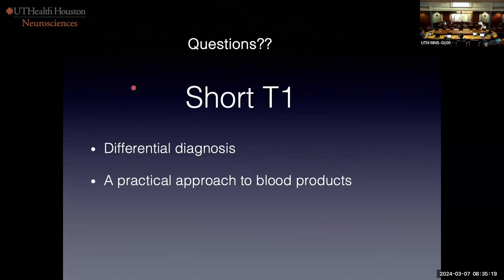Why aren't higher magnets like 7 Tesla or 5 Tesla practical? The physics answer: the possible signal you can get scales with the square of the magnetic field strength. So going from 1.5 to 3 tesla doesn't give you two times signal — it gives you four times signal. So why not keep going? Well, the T1 of tissues increases with increasing magnetic field strength.